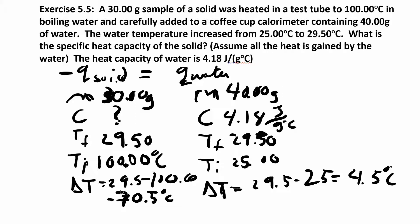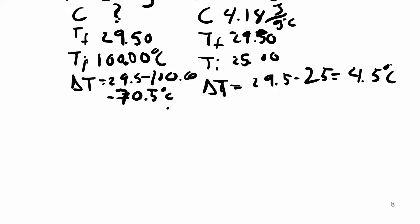Those are my temperature changes. One's positive, one's negative. Somebody's giving up heat, the other one's gaining the heat. Now I can set up my equation. I have q equals basically mc delta t is q, and that equals mc delta t over here. The q of the solid—negative q of the solid is equal to q of the water.